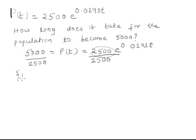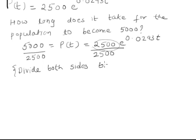So what you have done: divide both sides by 2500, or whatever is the coefficient of this exponential term. You will divide both sides by the coefficient of the exponential term. So this gets cancelled here, and you are left with 2 equals e raised to 0.0293t.